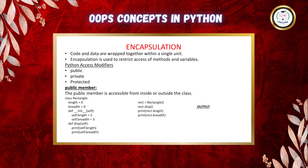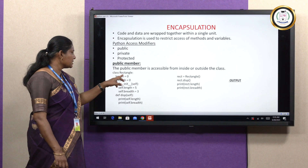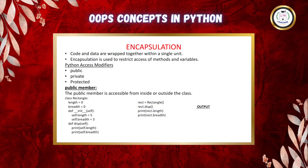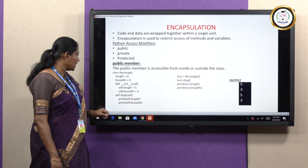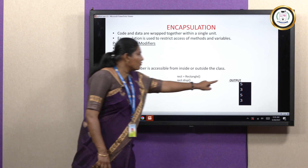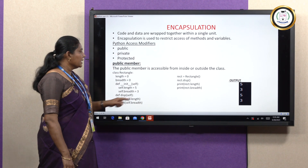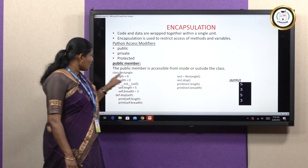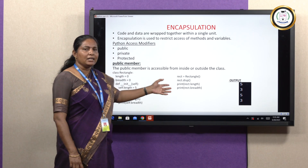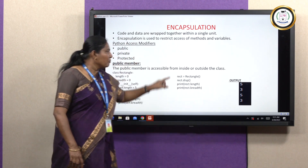This is the example program for how to use public members in a Python program. In class rectangle, length and breadth are two public variables, initially holding the value 0. There is one constructor function and one class method. When we create the object rect, the constructor is automatically invoked, assigning 5 to length and 3 to breadth. We call the function display to print the values of length and breadth, so 5 and 3 are printed. Since length and breadth are public variables, we can also print them from the main method — the values 5 and 3 are displayed.